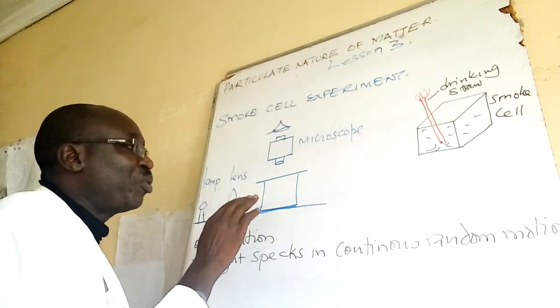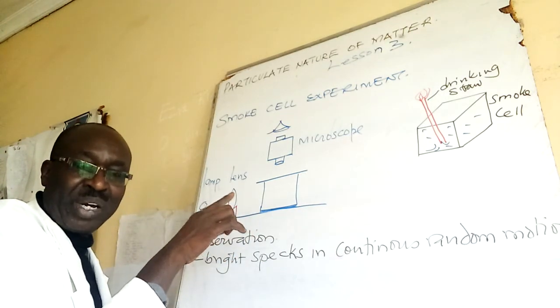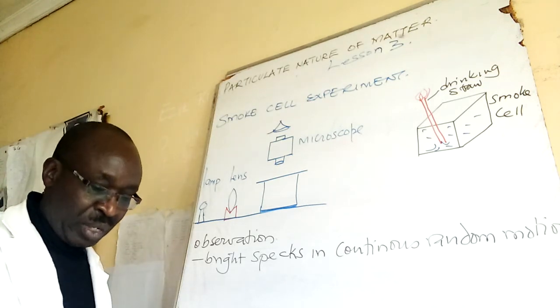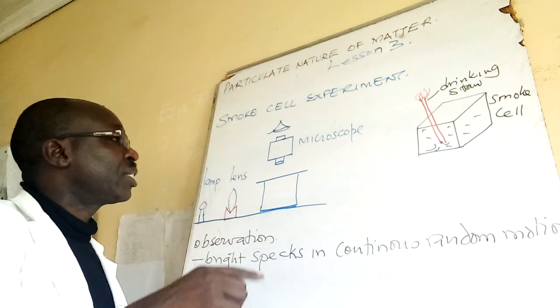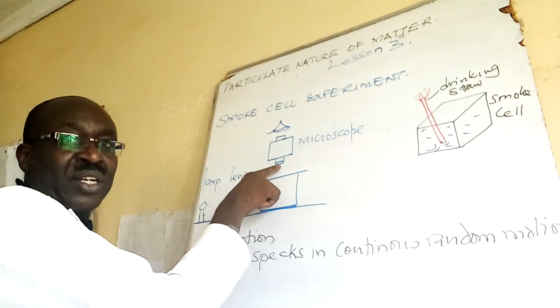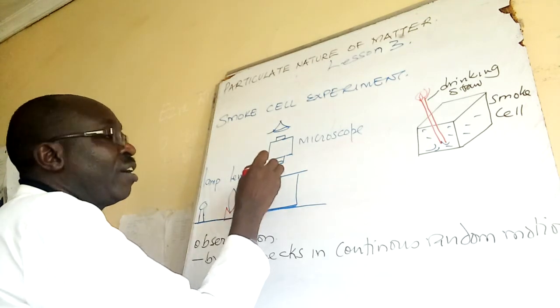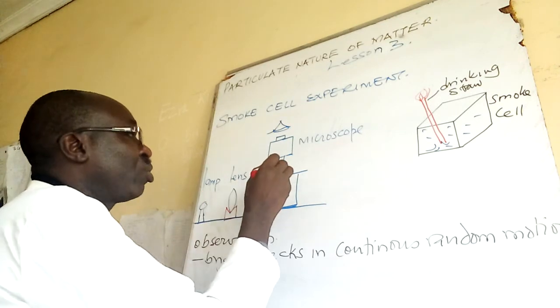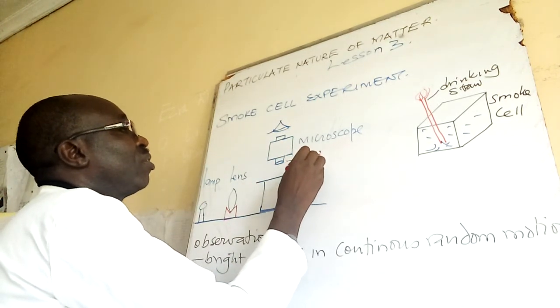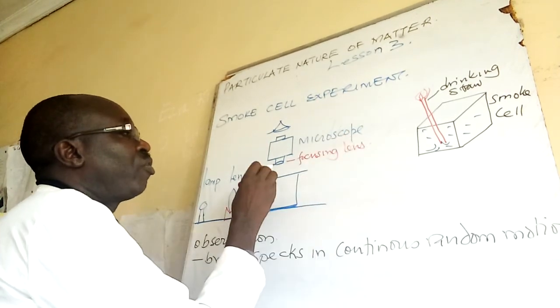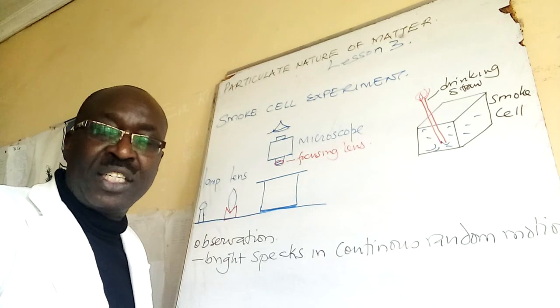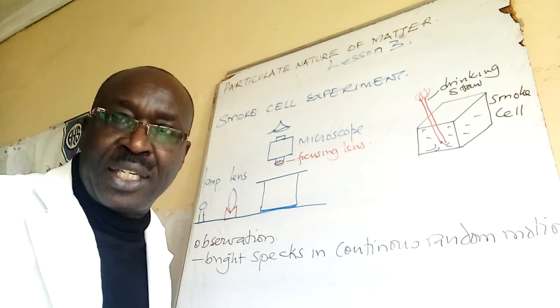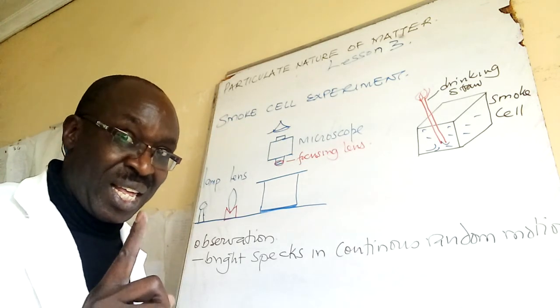After you have covered, now you bring that cell under the microscope for further observation. So the microscope has down here a focusing lens. This focusing lens, you use it to help you focus on what is the subject of the study.